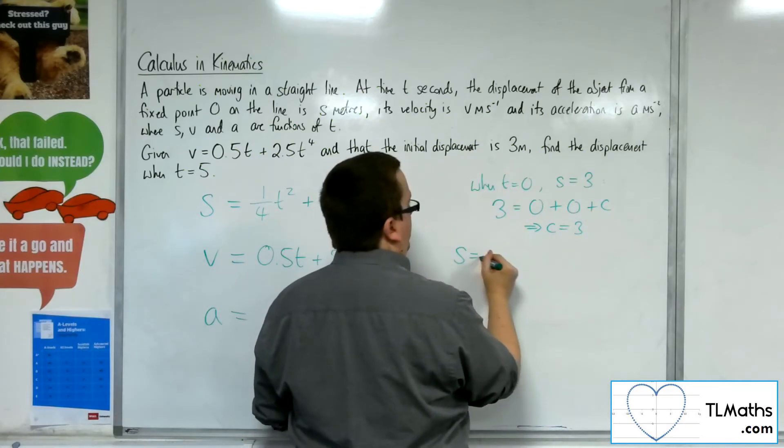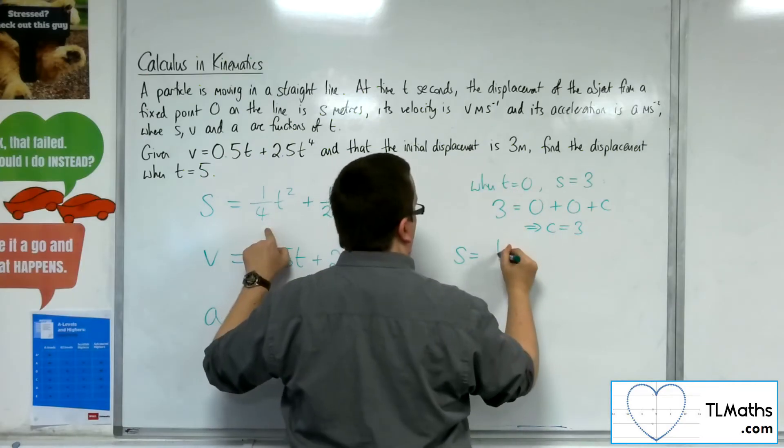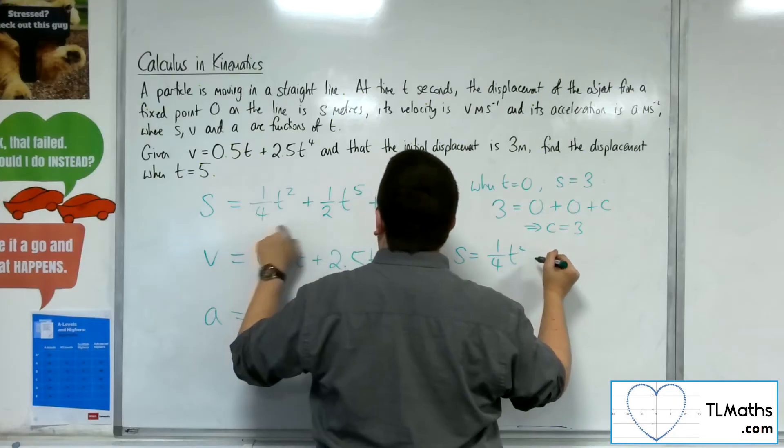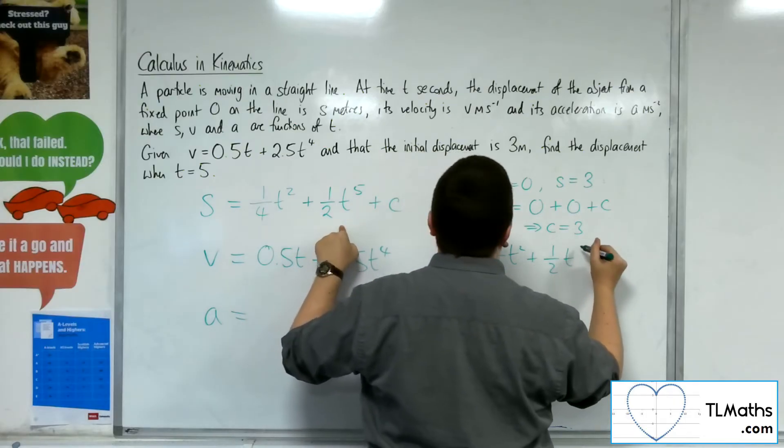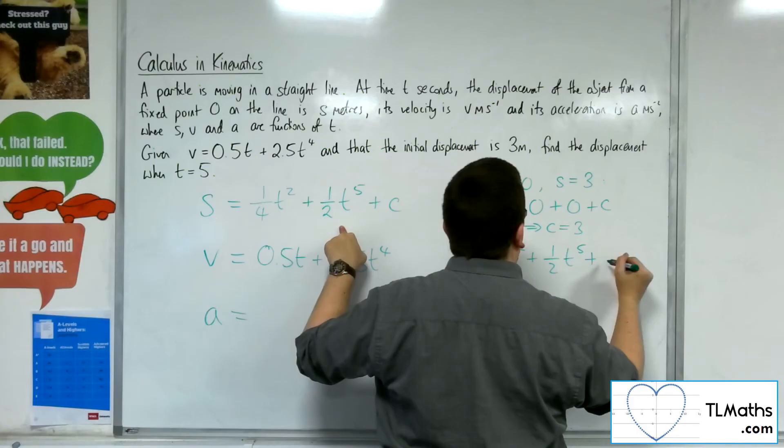So my equation for the displacement is 1 quarter t squared plus 1 half t to the 5 plus 3.